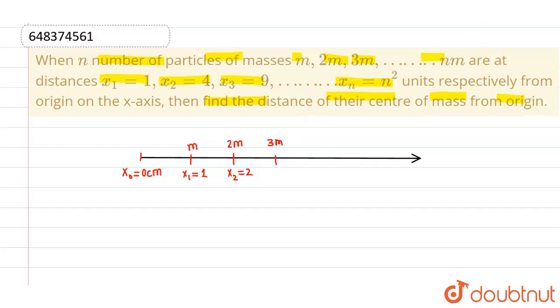The third particle whose mass is 3m is at x₃ = 9, and so on. The last particle whose mass is nm is at a distance n² units from the origin.